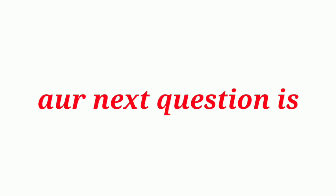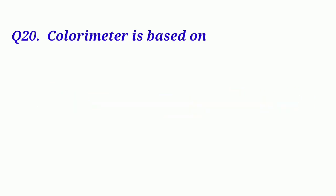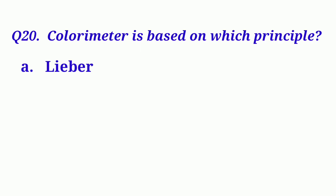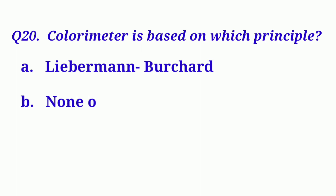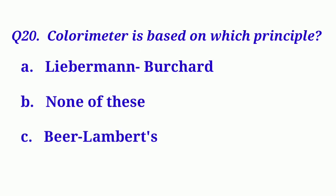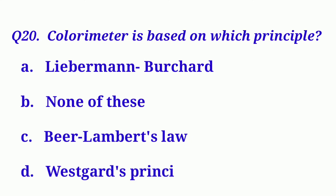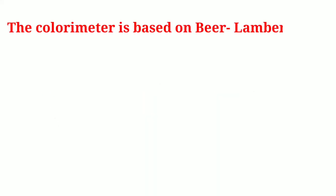Our next question is: The colorimeter is based on which principle? Option A: Liebermann-Burchard. Option B: None of these. Option C: Beer-Lambert law. And Option D: Westgard principle. We know the colorimeter is based on Beer-Lambert law.